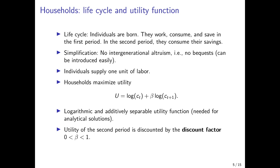Individuals supply one unit of labor on the labor market, using wage income to consume in the first period and save for the second. Utility depends on consumption in both periods and is additively separable. Second period utility is discounted by the discount factor beta, which lies between 0 and 1. The smaller beta is, the more impatient people are, as they put less weight on future consumption. We also assume logarithmic period utility functions.